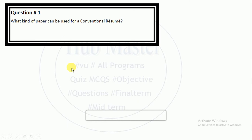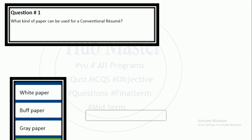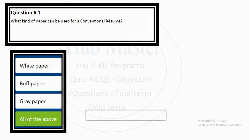Question: what kind of paper can be used for a conventional resume? For a conventional resume, we use three types of paper: white paper, buff paper, and grey paper. That's why you use 'all of the above.'